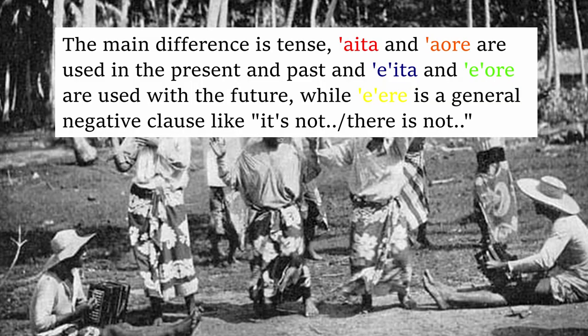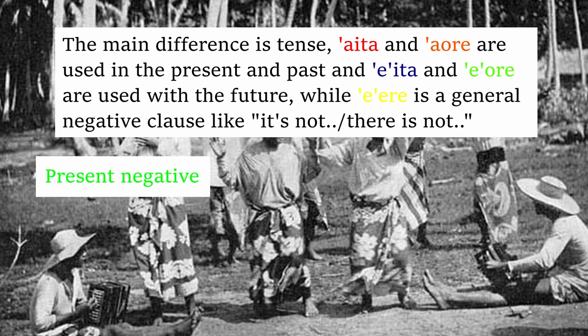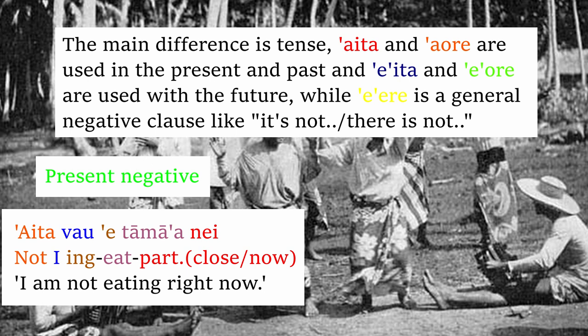Negative forms. In Tahitian, the negative particle comes right before the verb. Tahitian has five different negative particles, with the main difference being tense. Aita and Aore are used in the present and the past, and Eita and Aore are used with the future, while Eere is a general negative clause — like 'it's not' or 'there's not.' In the present negative form, we have: Aita vau e tama'a nei. Aita means 'not,' vau is an object form of 'I,' e is the continuous marker, tama'a means 'eating,' and nei is a particle which indicates closeness or proximity in time.